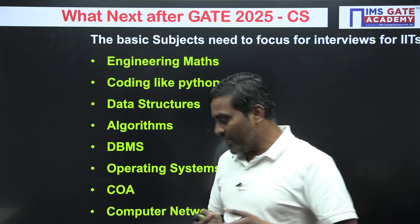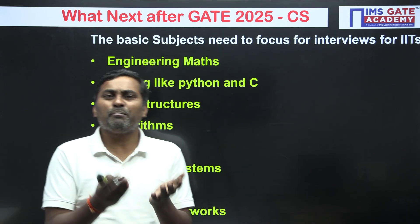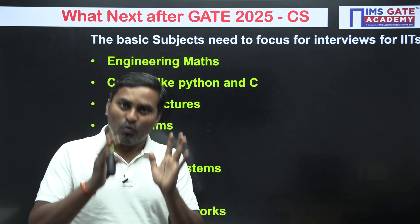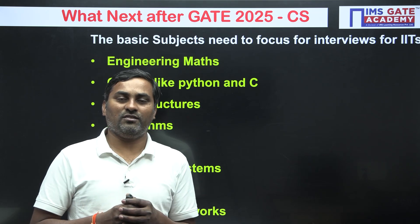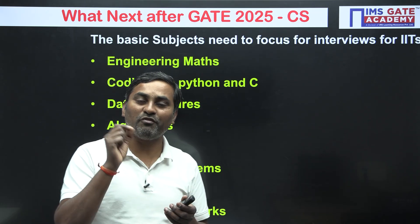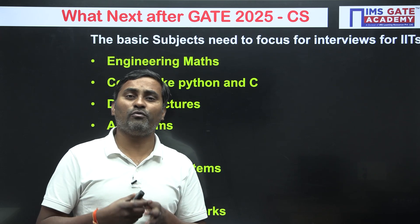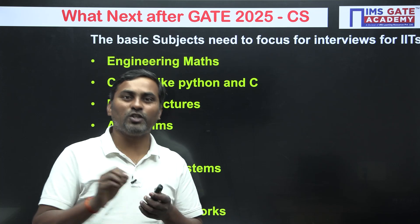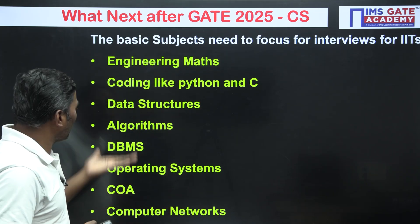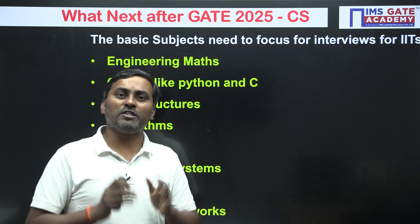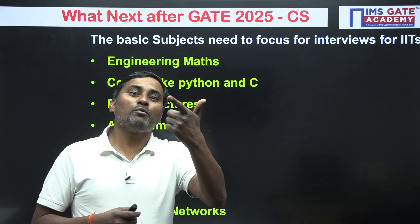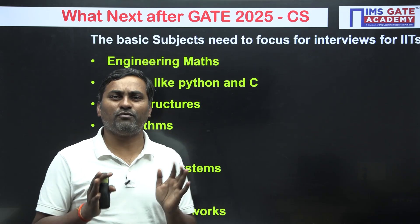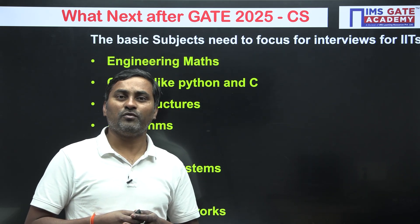Here's how it typically works: a written test will be there covering Engineering Mathematics, Algorithms, Data Structures, and other fundamental subjects. Once you clear the written test, for the interview they'll ask you to specify which subjects you want to be discussed. In that case, you need to specify the subjects you are very strong in — such as Operating System or whichever you are most interested in. At that moment you will not get time to prepare, so that is the reason these two months you should prepare very well.